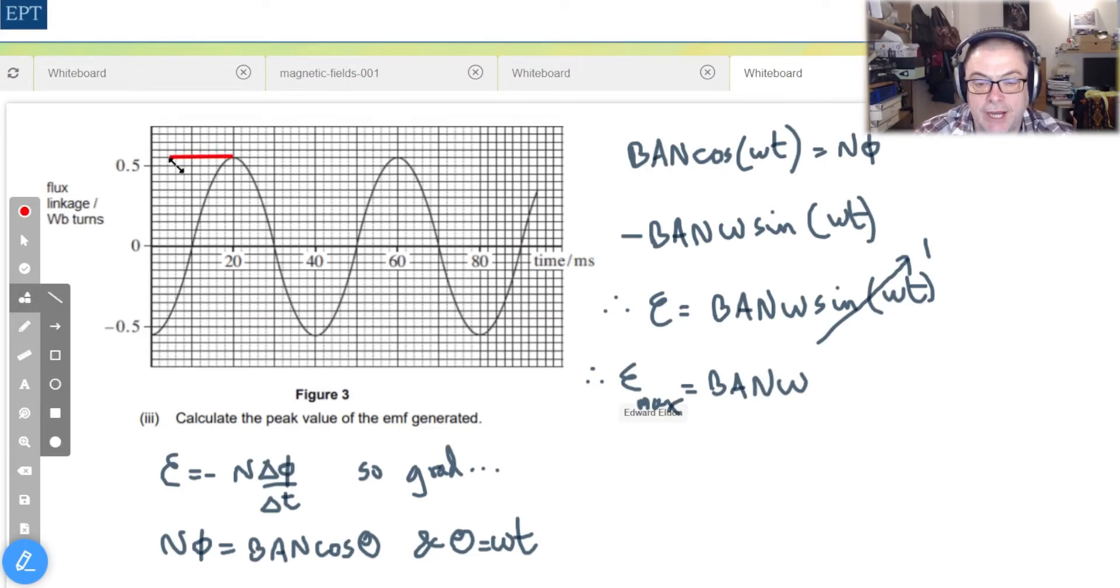So now it's a question of working out what our values are. Well we actually have flux linkage on the y-axis there which of course is B A N and we can read the maximum value from the graph - it's just the peak 0.55 Weber turns.